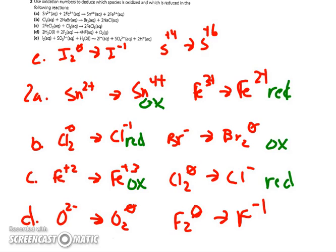D: oxygen is going from being in a compound to being elemental, so it's losing electrons and being oxidized — that's where the name came from — whereas fluorine is gaining those electrons and being reduced. E: iodine is becoming an ion and being reduced, while sulfur is giving up two more electrons and being oxidized.